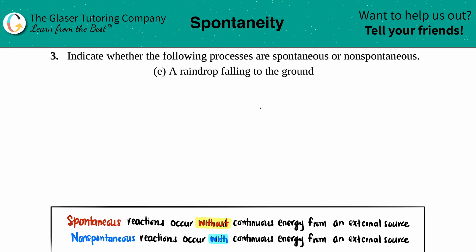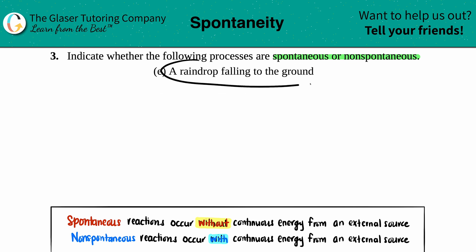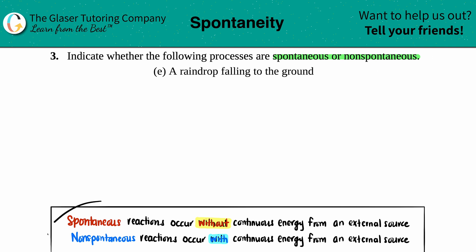Number three: indicate whether the following processes are spontaneous or non-spontaneous. Letter E — is a raindrop falling to the ground spontaneous or non-spontaneous?